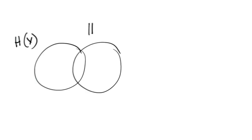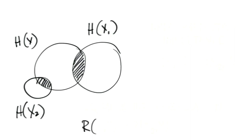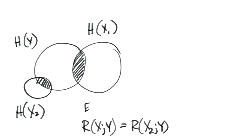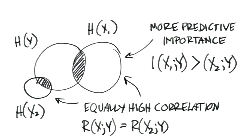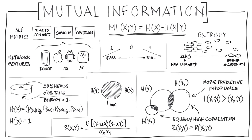The Pearson correlation does not tell us the importance of the network feature, or if there's not enough data to make an inference between the network feature random variable and the SLE metric random variable. Going back to our graphic of the circles, there may be one case where I have very high entropy for both variables, and another case where I have much smaller entropy on one of those variables. Both may be highly correlated with a high Pearson's value, but the entropy of mutual information will be much higher in the first case, meaning that random variable has much more importance in predicting success or failure. This process is demonstrated on the MIST dashboard by our virtual assistant.